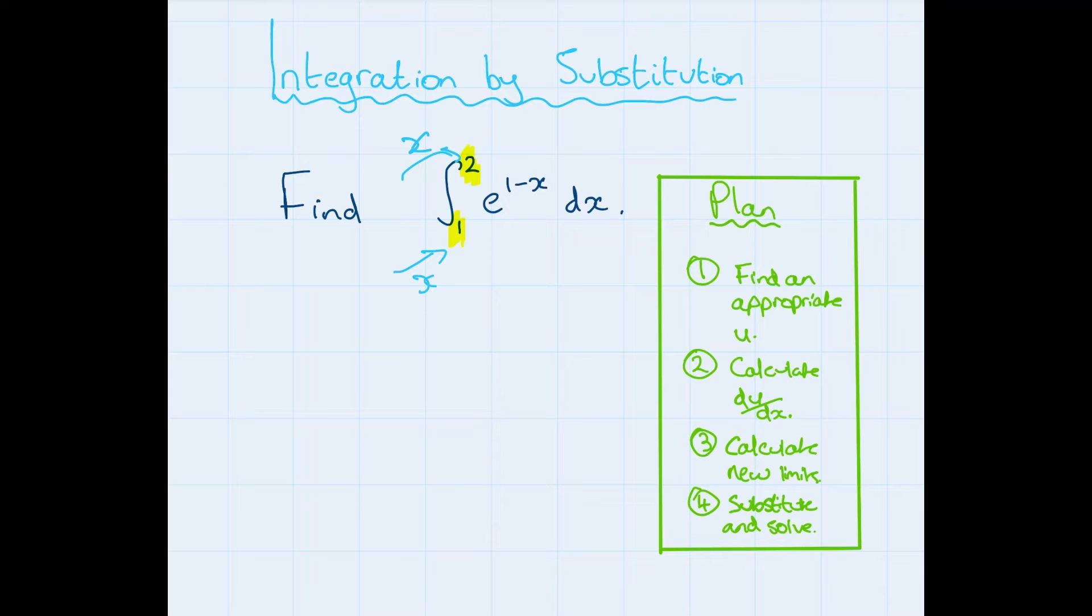Okay, now when we've got a function like this, you might start by choosing something like u equals 1 minus x. This is going to be very useful because e to the 1 minus x will just become e to the u, or e to the power of u. So let's follow our plan. Differentiate. So du by dx: well, one differentiates to zero, minus x differentiates to minus one.